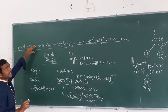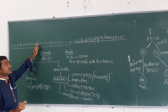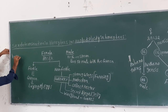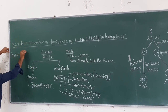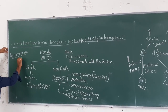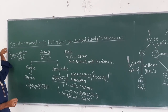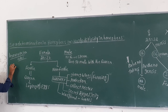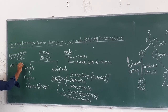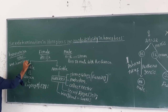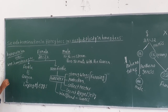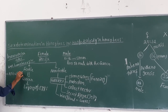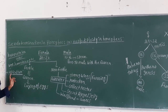This haplodiploidy type of sex determination is observed in the order Hymenoptera, which is the biggest order of insects, including wasps and bees. The study and cultivation of bees is called apiculture — an important question in PU examinations.